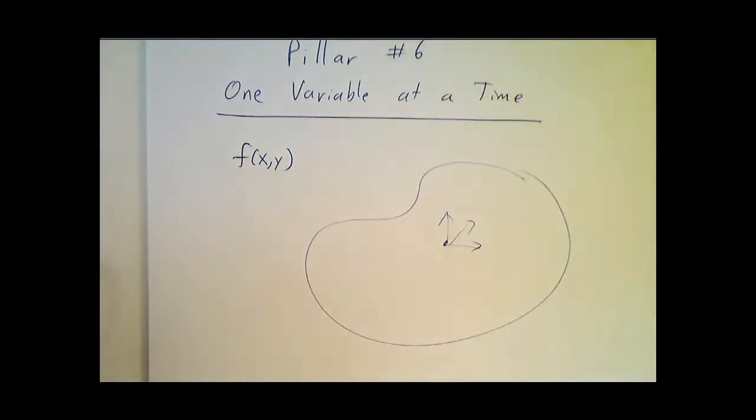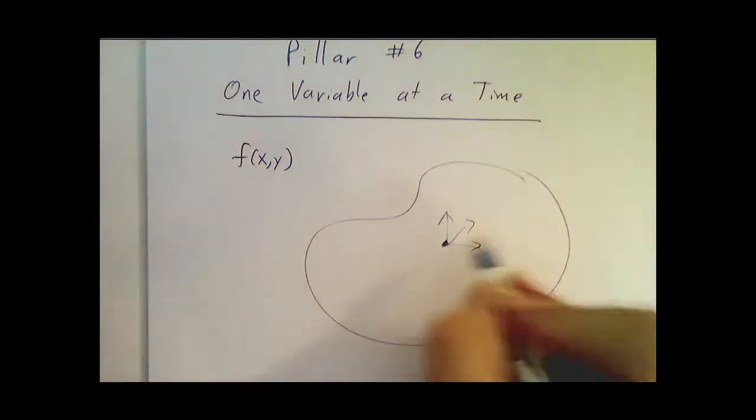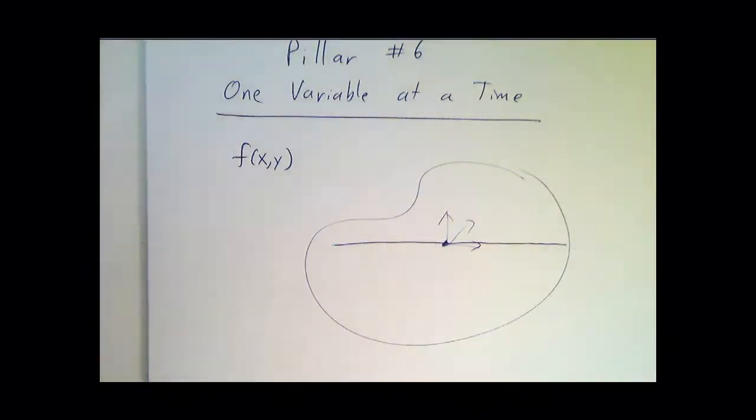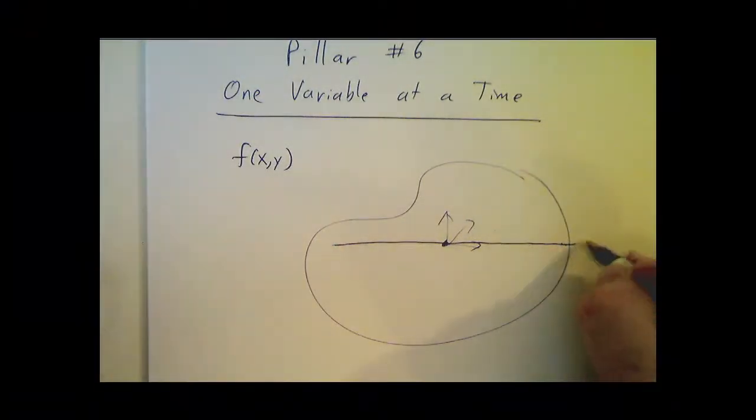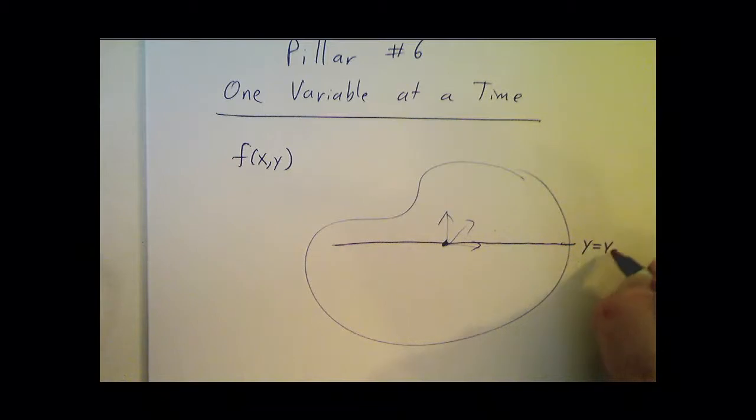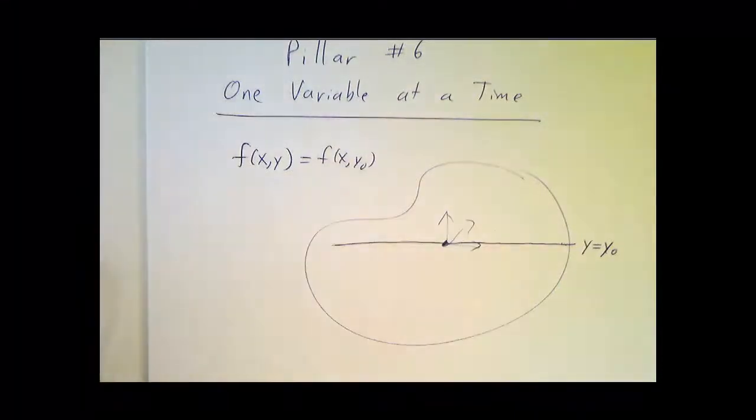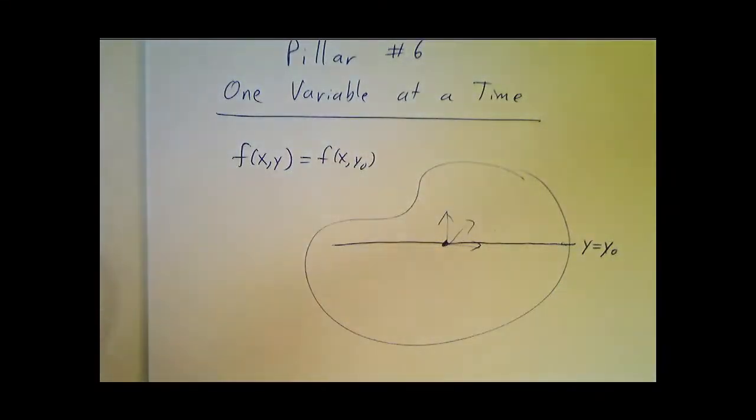But the simplest thing you can do is to just say, let's figure out what happens when we just change x and ignore y. Well, if we do that, y takes on a particular value. And our function of x and y becomes a function of x with a particular value of y plugged in. And y is now a constant.